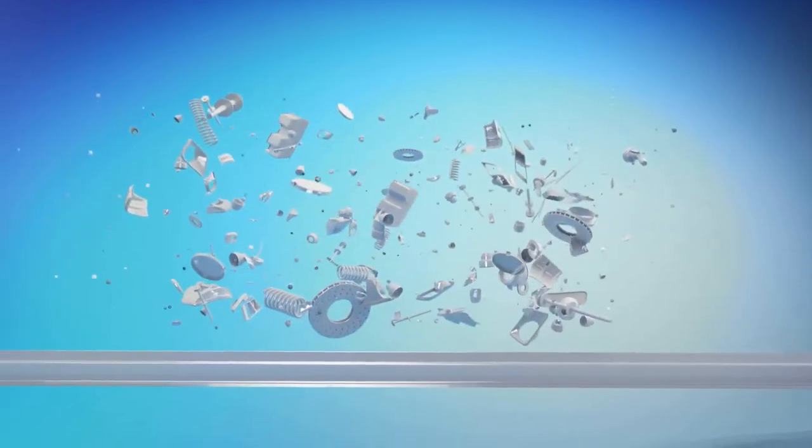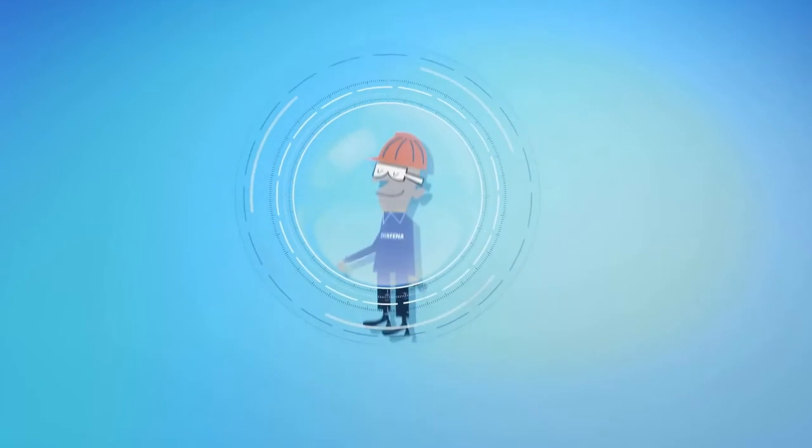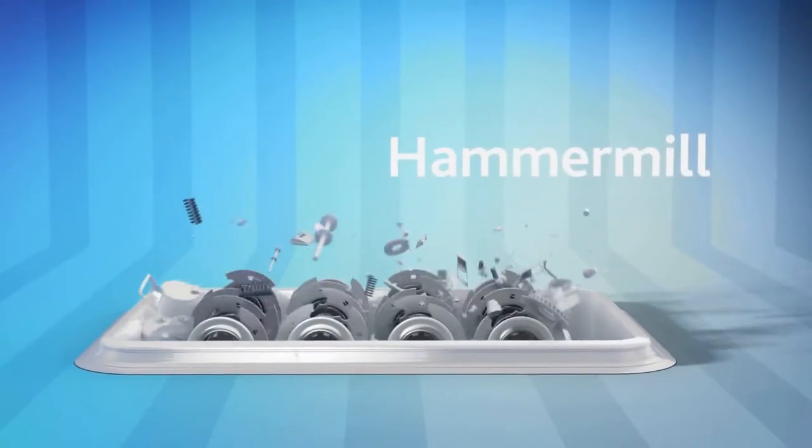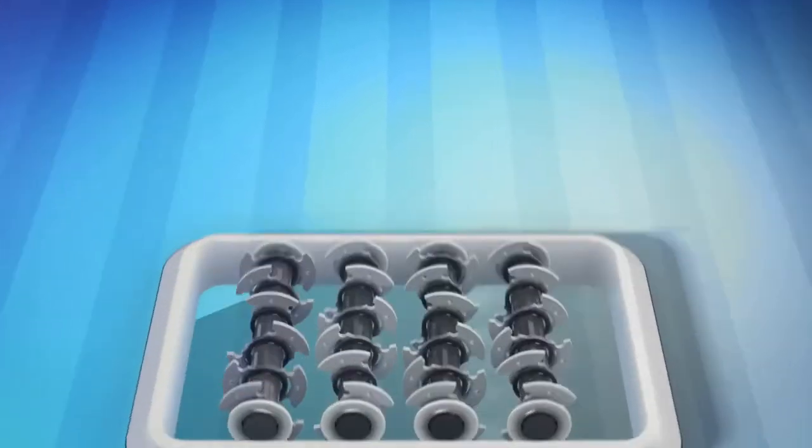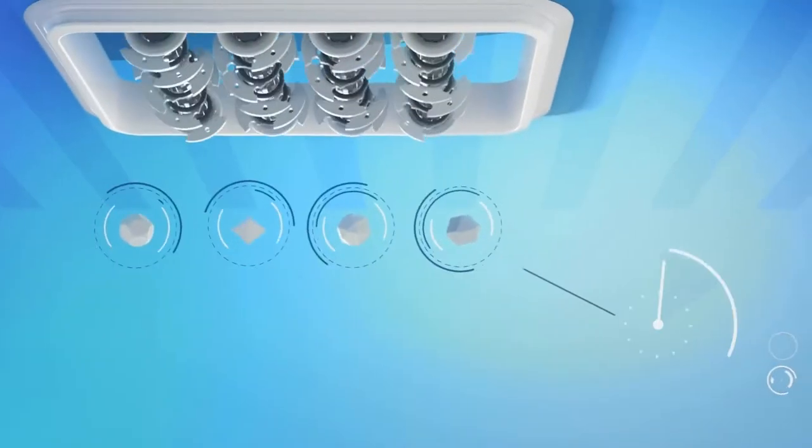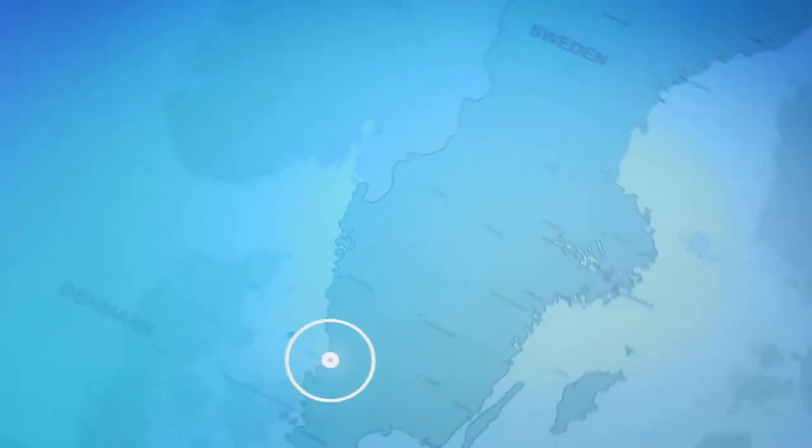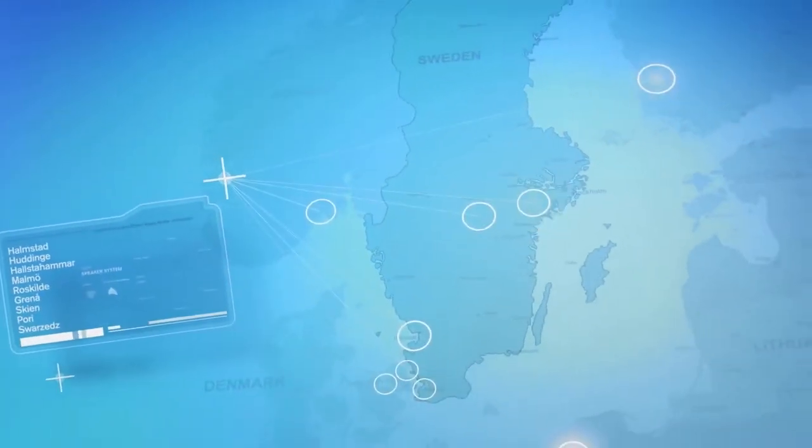A car consists of thousands of different components made from many different materials. Taking it apart by hand would take an enormously long time. Our large hammer mill breaks a car down into manageable fist-sized pieces in a matter of seconds. This type of mill is in operation at several locations in the Stiena production network.